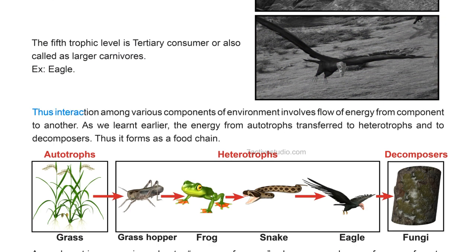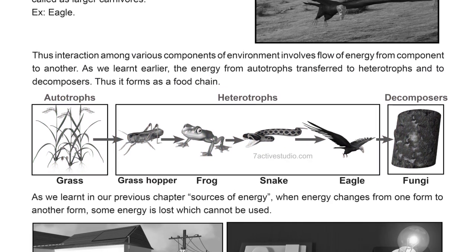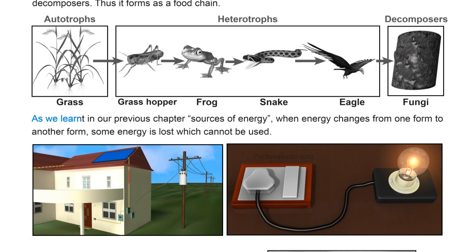The interaction among various components of the environment involves the flow of energy from one component to another. Energy from autotrophs is transferred to heterotrophs and then to decomposers, forming a food chain. As we learned in our previous chapter on sources of energy, when energy changes from one form to another, some energy is lost and cannot be used.